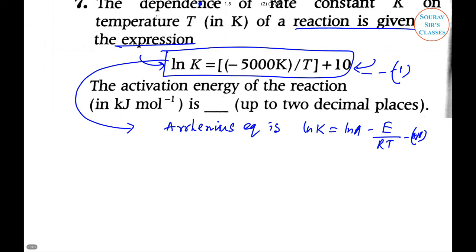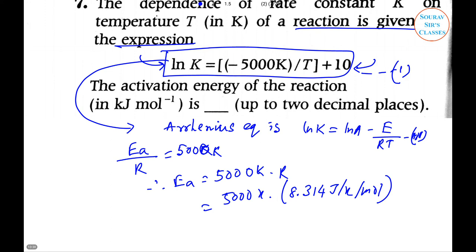By comparing equations one and two, we can write E_a/R equals 5000K. So E_a equals 5000K times R. Substituting R equals 8.314 J/K/mol, we get 41,570 J/mol, or 41.57 kJ/mol. The activation energy is 41.57 kJ/mol up to two decimal places.